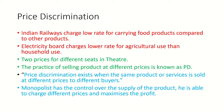From an economic angle, there is one key condition: the monopolist must have full control over the supply of the product. Only then is he able to charge different prices and maximize profits.